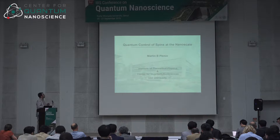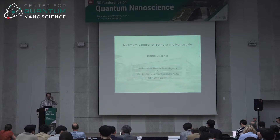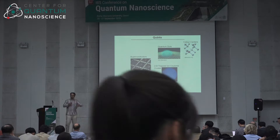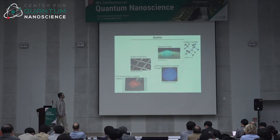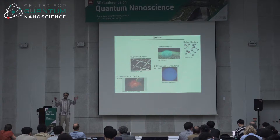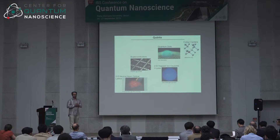I would like to spend a few words on a particular topic that I'm interested in, and that concerns the control of spins at the nanoscale. There are many spin systems — two-level systems or qubit systems — that we are trying to consider as basic building blocks for quantum information processors. They range from cold atoms and ions, superconductors, quantum dots, and color centers in diamond, which are of particular interest to me personally.